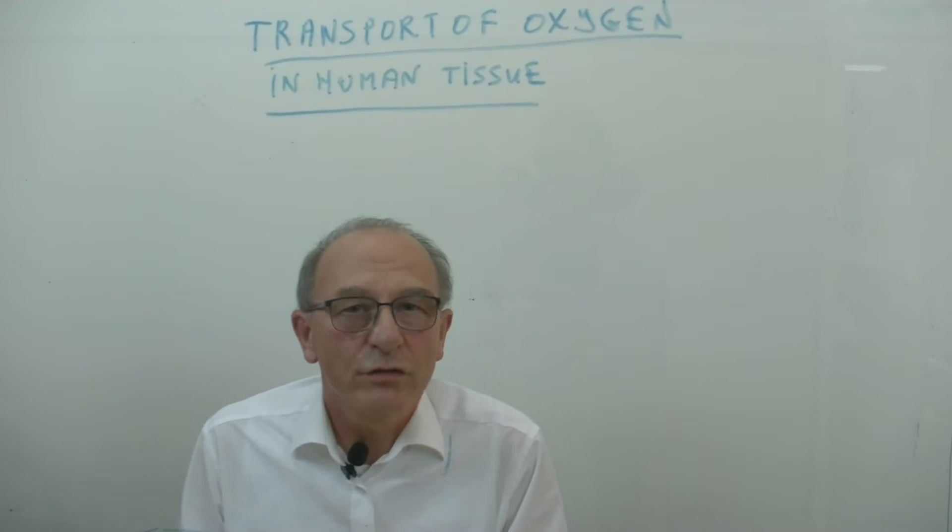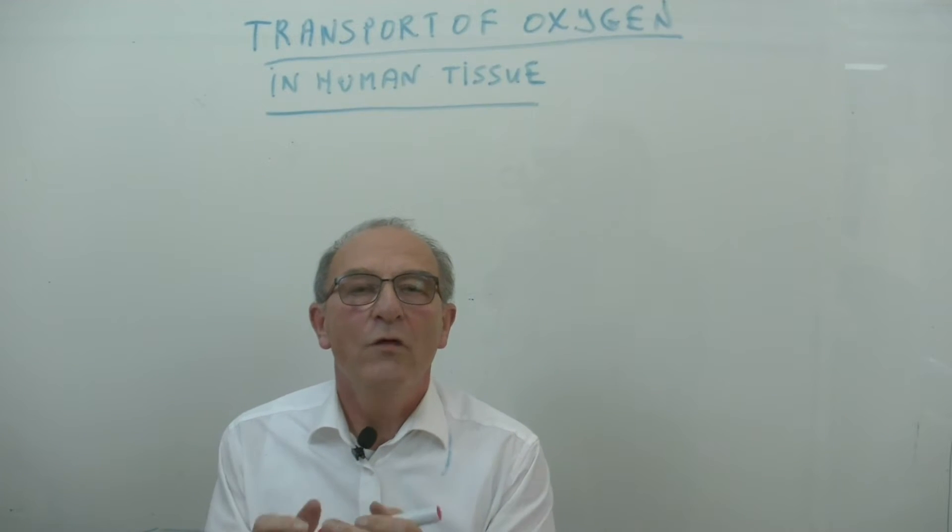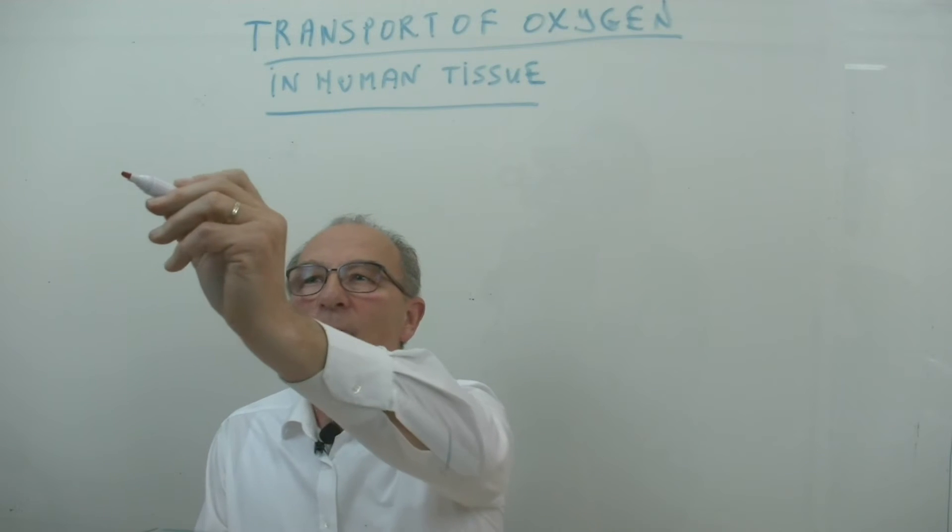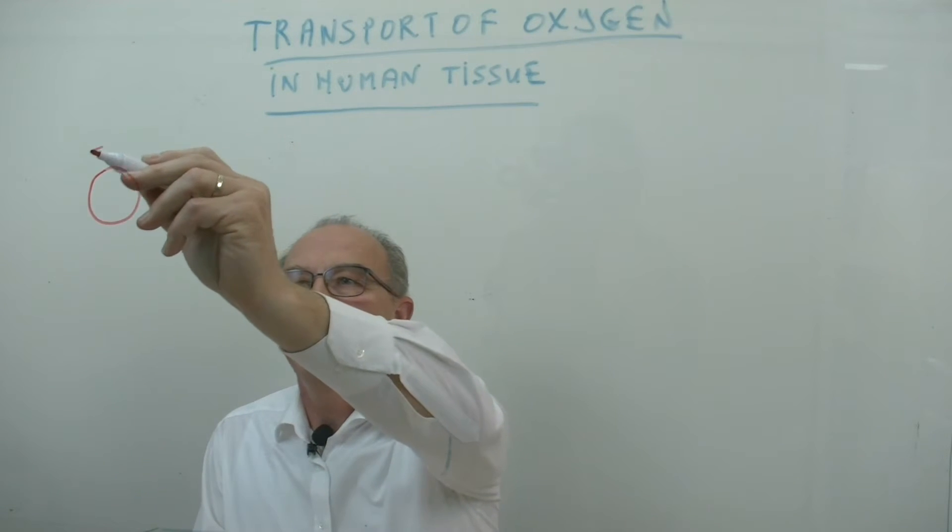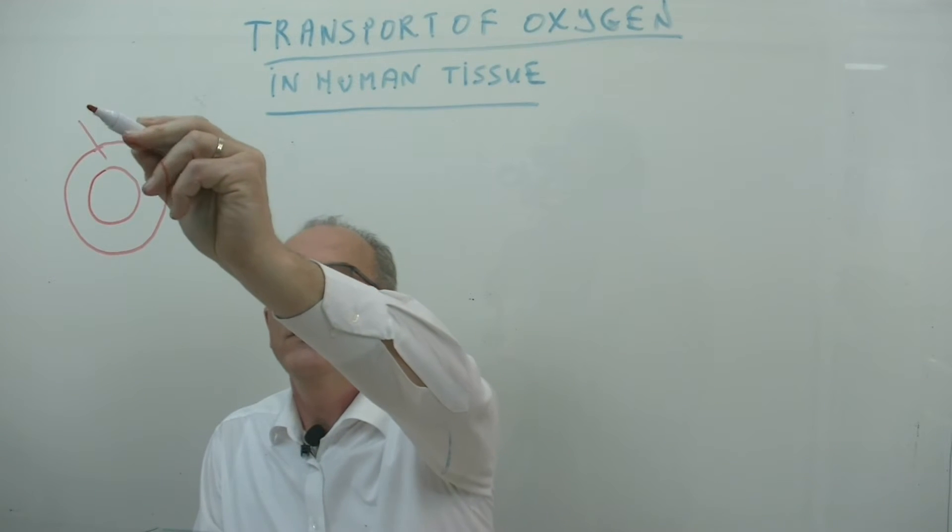Nobel Prize winner August Krogh investigated the diffusion of oxygen into human tissue. He looked at a vein surrounded by an annular space of tissue. So here we have tissue.